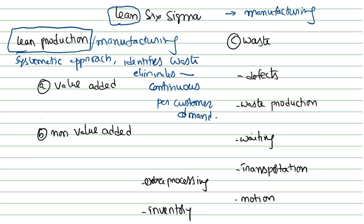To define it again: lean production is a systematic approach which identifies and eliminates waste through continuous improvement by flowing the product as per the customer demand. The term 'lean' corresponds to no waste, where waste refers to anything that adds to the cost of the product.